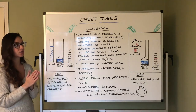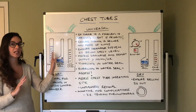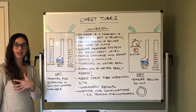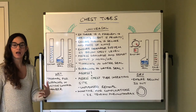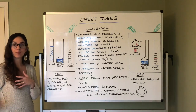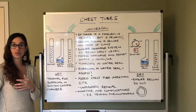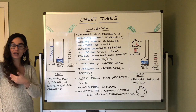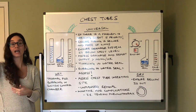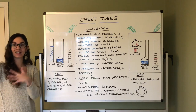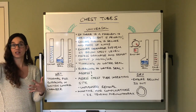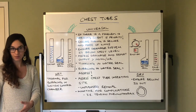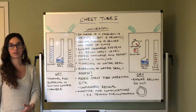Ensure that the drainage system is always below the level of the chest. Just like a Foley catheter, we want gravity to assist with drainage. If you took the collection chamber above the chest, fluid and air could flow back into the chest — which we absolutely don't want — potentially causing a tension pneumothorax. So always ensure the collection chamber is below the level of the chest.